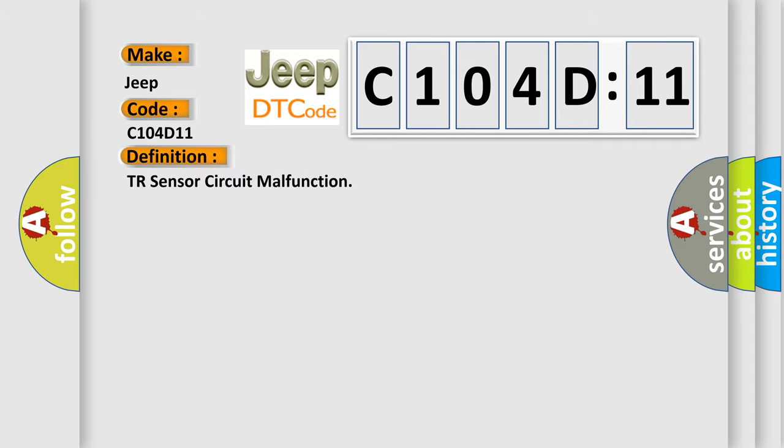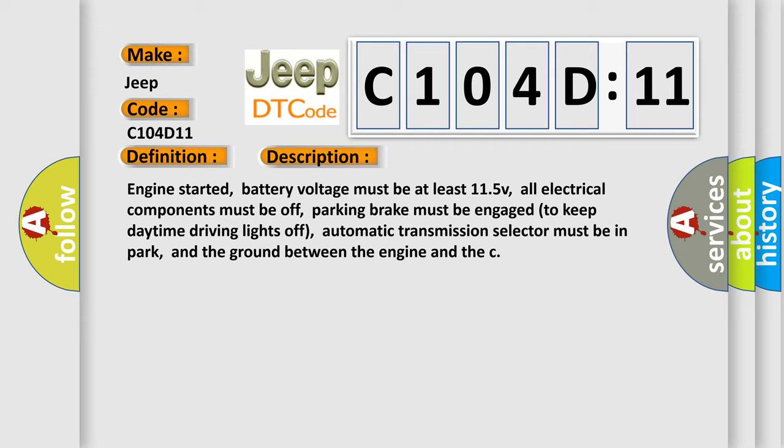And now this is a short description of this DTC code. Engine started, battery voltage must be at least 11.5V, all electrical components must be off. Parking brake must be engaged to keep daytime driving lights off. Automatic transmission selector must be in park. And the ground between the engine and chassis must be secure.